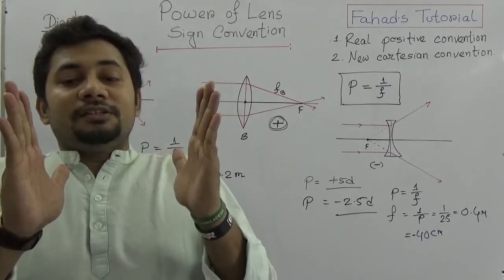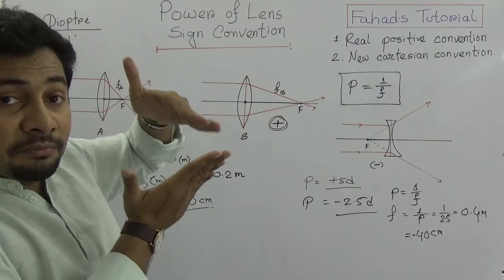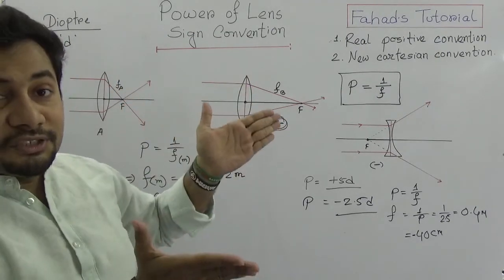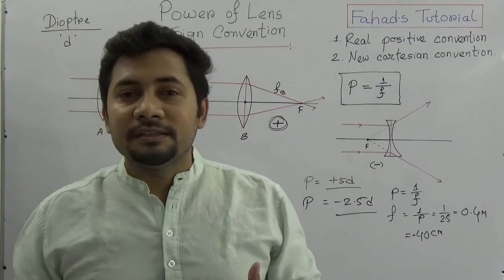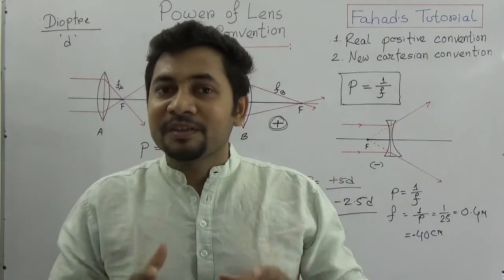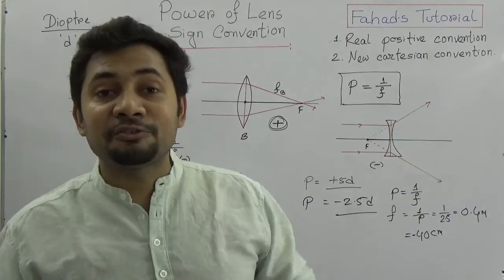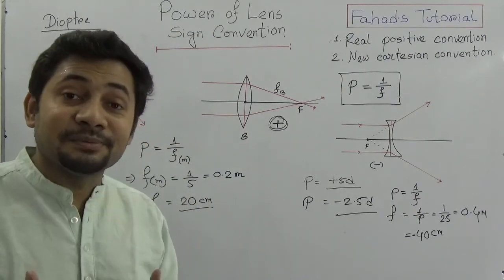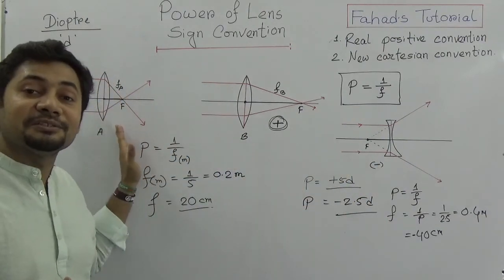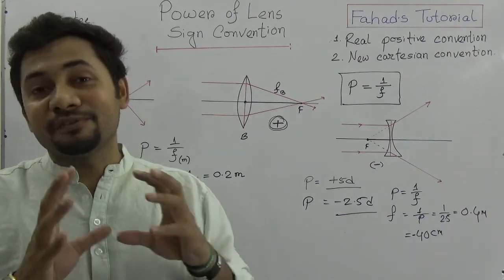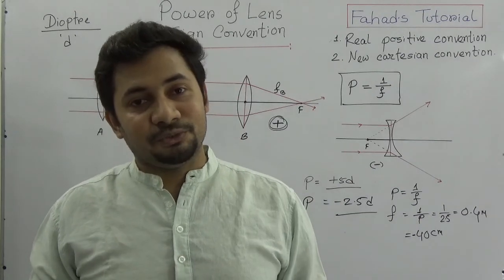Shorter focal length means the lens has more capability to produce a convergent or divergent ray. This applies to both convex and concave lenses. When we think about visual defects in humans — hypermetropia and myopia — myopia patients use concave lenses and hypermetropia patients use convex lenses.